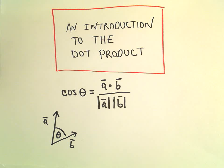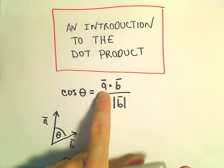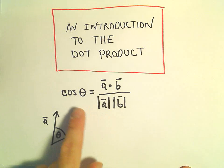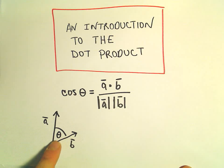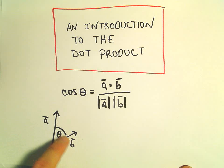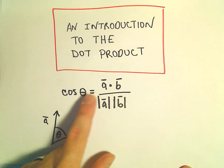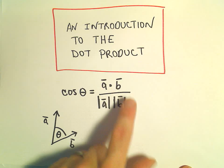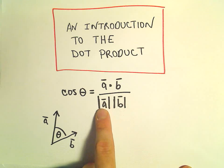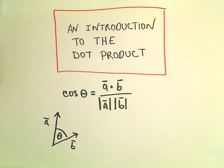Alright, so one of the uses of the dot product is the dot product actually helps us to relate an angle between two vectors. So if we have vector a and b with an angle of theta in between them, it turns out that cosine of theta is going to equal the dot product a dot b divided by the magnitude of a times the magnitude of b.